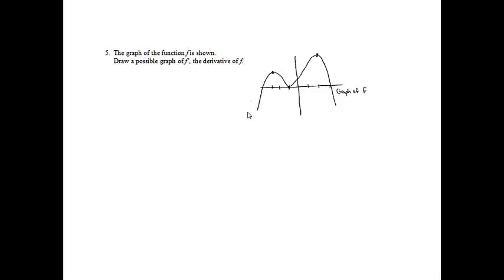Problem 5. The graph of the function F is shown. Draw a possible graph of F prime, the derivative. I'm going to make an F prime chart to help. For F prime, I'm looking at the slopes of F — whether it's increasing or decreasing. The slopes are positive until negative 3, then negative until negative 1.